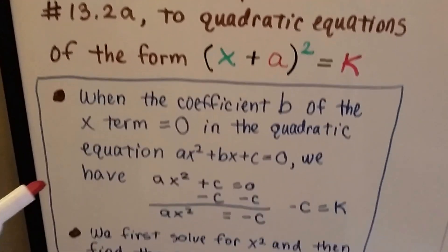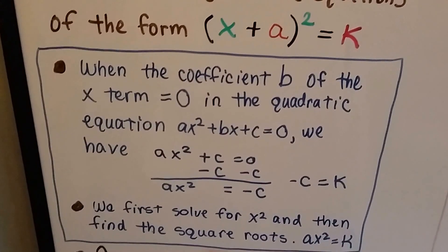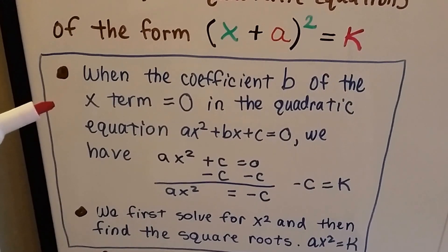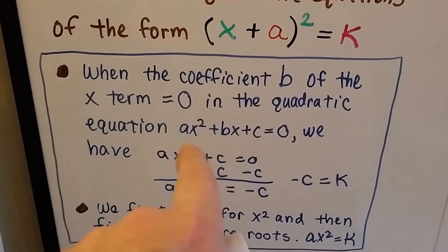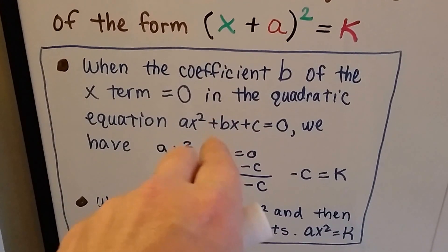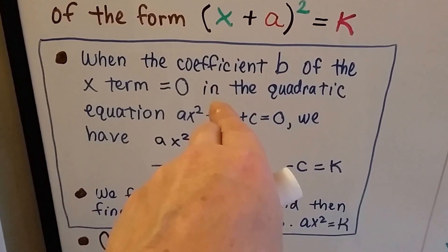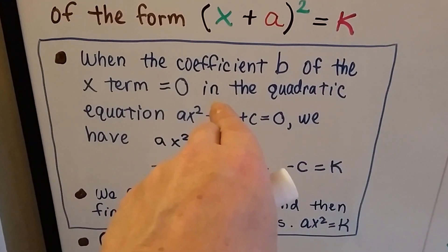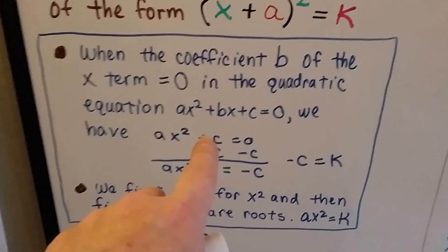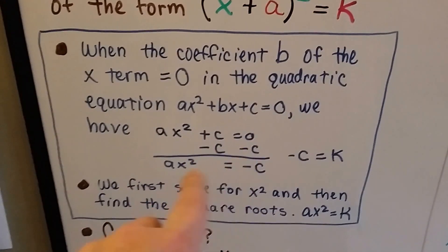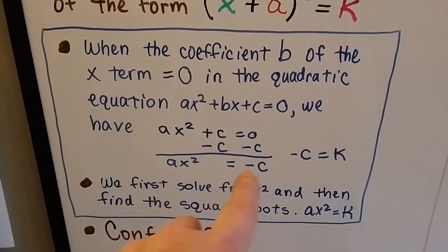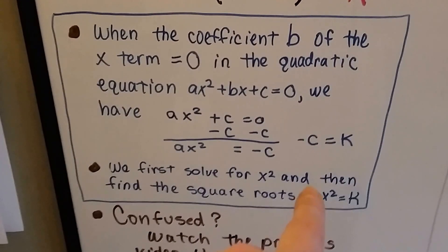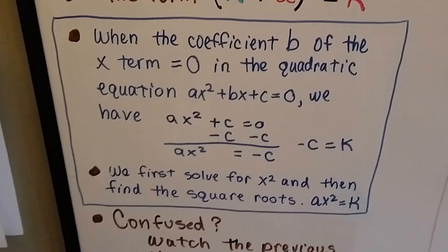Now, in the previous video, we had ax squared equals k instead of this. And when the coefficient b of the x term is 0, when in this quadratic equation, when b is a 0, that means 0 times x. So we don't even need to put it in the equation. So we've got ax squared plus c equals 0. If we subtract c from both sides of the equation, we end up with ax squared equals a negative c. And that's where the k came from. We first solve for x squared, and then we find the square roots. So we ended up with this as our equation from the last video.